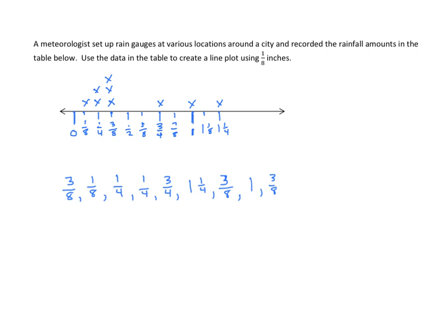If we were asked for the least frequent, well, that would be a four-way tie between 1/8, 3/4, 1, and 1 and 1/4. So, again, this is an easy way to see our frequency and to look at our range of data, finding the least and greatest.